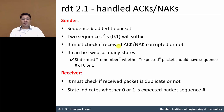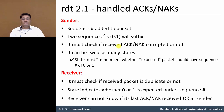If the packet is a duplicate, the receiver sends an acknowledgement and the state indicates whether 0 or 1 is the expected packet sequence number. The receiver doesn't know if the last acknowledgement or negative acknowledgement was received correctly at the sender side.